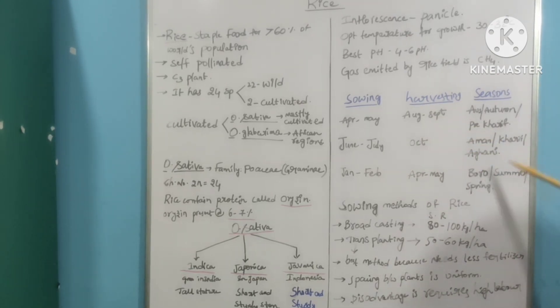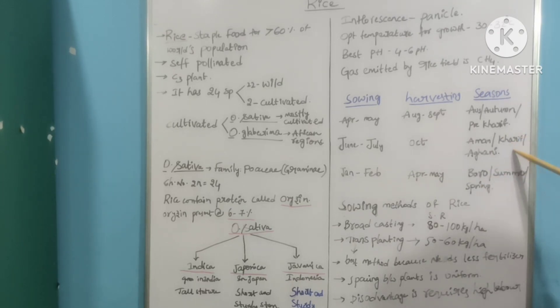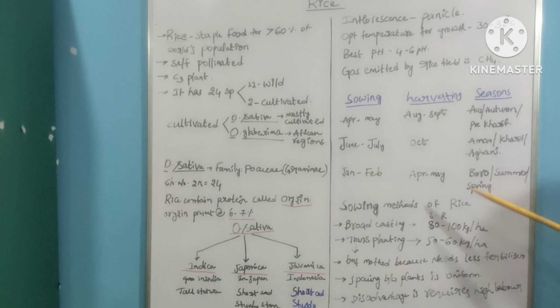Aman or Kharif or Aghani - in this season, the rice is going to be sown at the time of June to July, and it should be harvested at October.